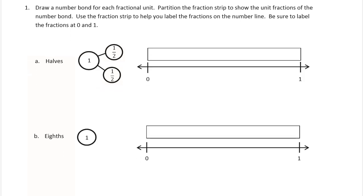Draw a number bond for each fractional unit. Partition the fraction strip to show the unit fractions of the number bond. Use the fraction strip to help you label the fractions on the number line. Be sure to label the fractions at 0 and 1. So we're transitioning from fraction strips to fractions on a number line. And they're really not much different, it's like looking at a ruler really.